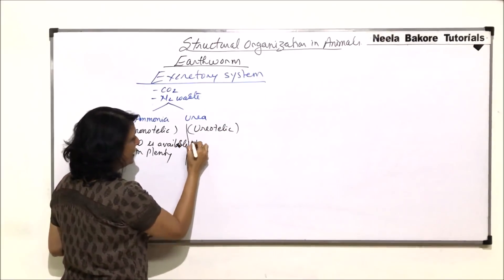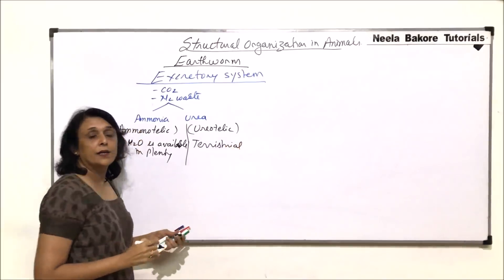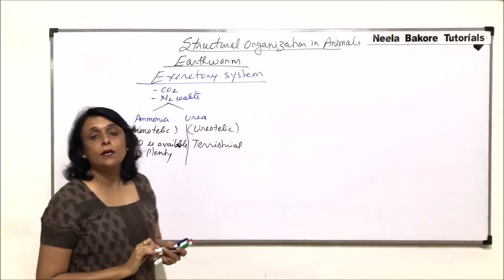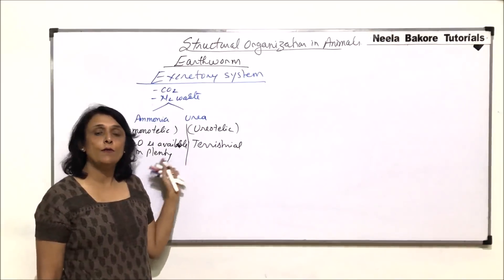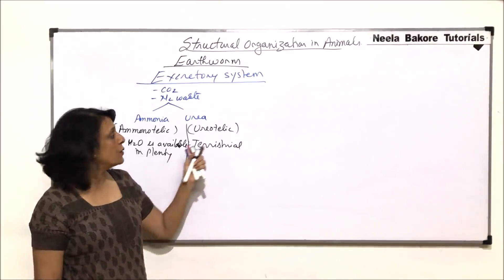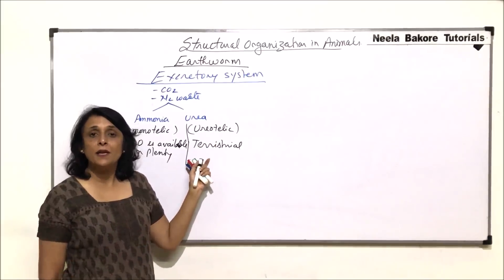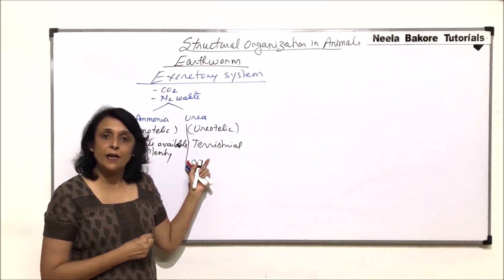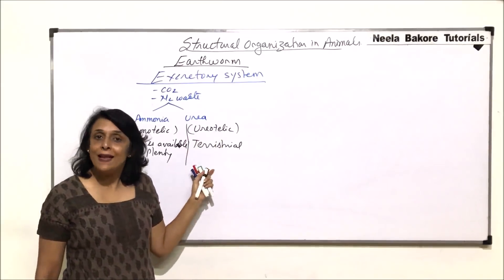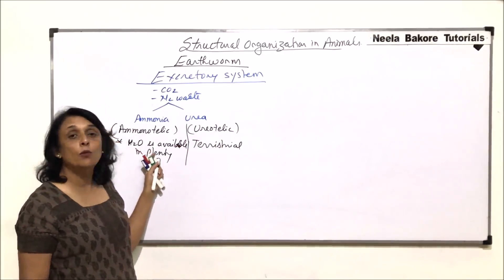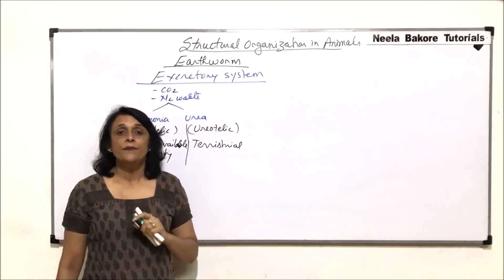If they are terrestrial, they become ureotelic, because water is not available in excess. For removal of ammonia a large quantity of water is required, whereas for urea less water is needed. So if they are terrestrial they would prefer conserving water and eliminating urea. They can be ammonotelic or ureotelic depending upon the conditions.